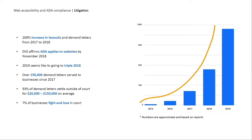At first, only the largest enterprises and government institutions were legally pressured to become accessible. One of the most significant shifts in the legal climate was when the Department of Justice at the end of 2018 officially affirmed that all websites are considered public accommodations and therefore must comply with Title III of the ADA.